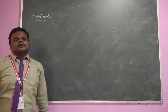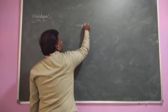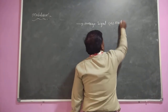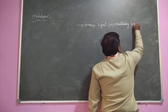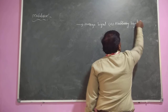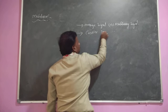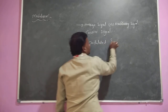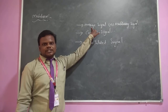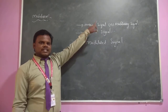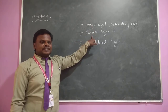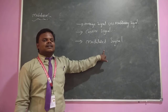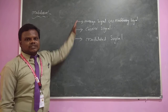In the modulation process, there are three signals involved. The first is the message signal, which is also called the modulating signal. The second one is the carrier signal, and the third one is the modulated signal. The message signal consists of the message to be transferred. The carrier signal is nothing but a high-frequency, empty signal which is used to transmit the message signal over longer distances. The modulated signal is the actual outcome of the modulation process.